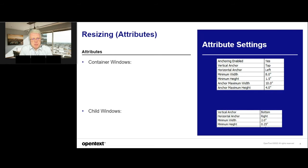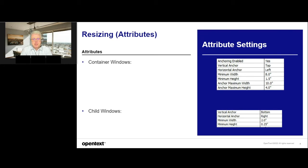Let's start with resizing attributes. For container windows like a dialog or a form window, we have new attributes like anchor maximum width. On the right-hand side at the top, you can see we have a minimum width, a minimum height, an anchor maximum width, and anchor maximum height — so within this range we can resize our container windows. For child windows, we have a minimum width; you can decide it doesn't make sense to show only one character, so the minimum width can be set to maybe two inches, or the minimum height to 0.25 inches.